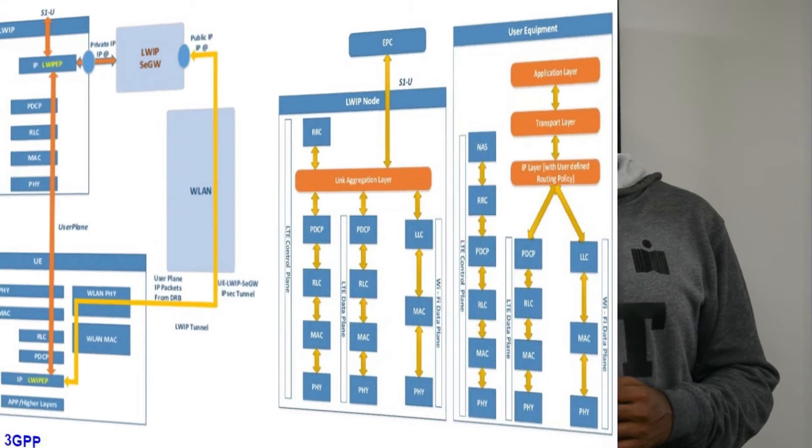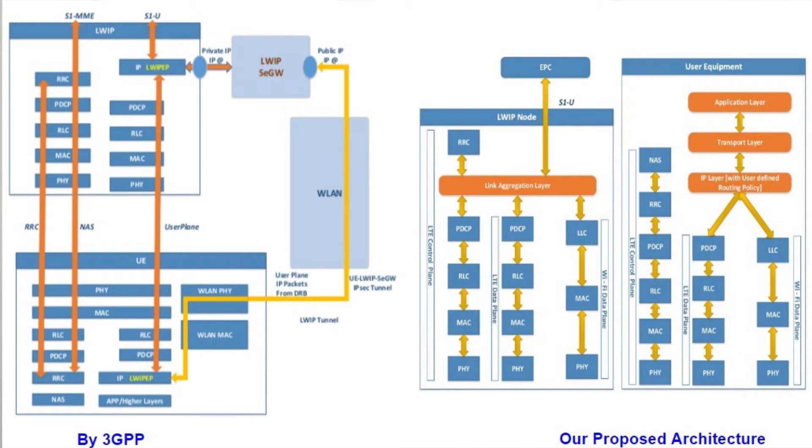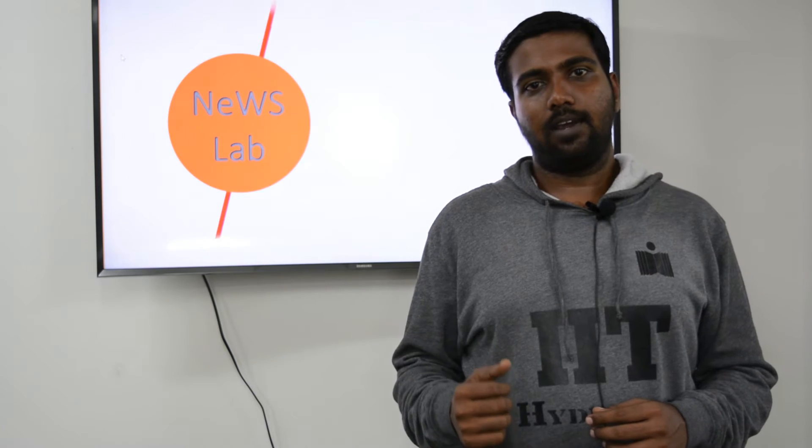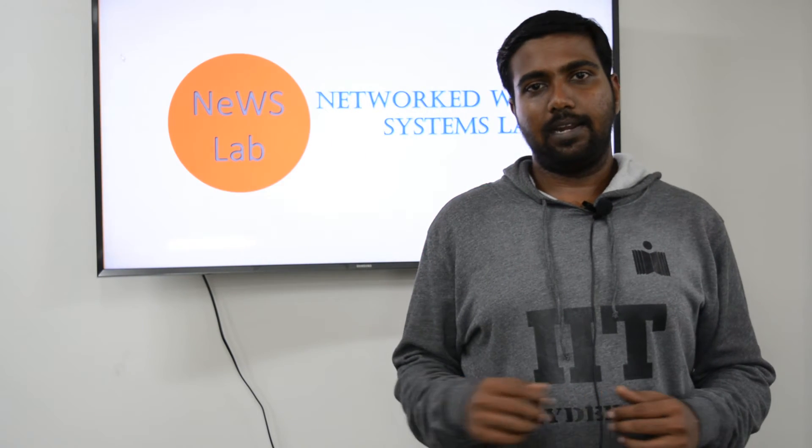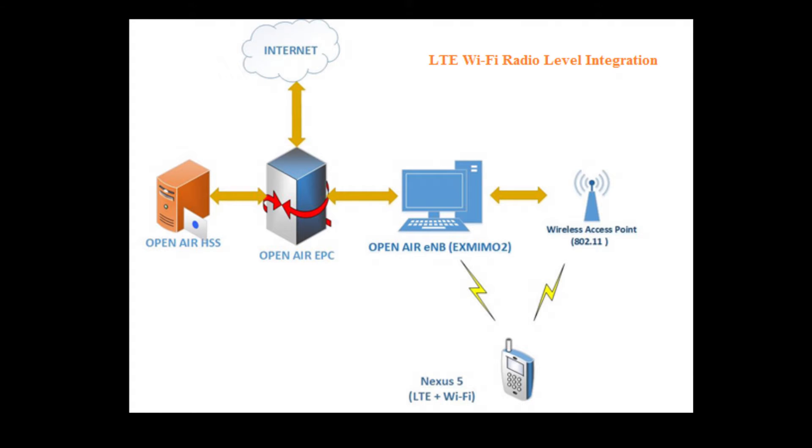We have implemented this using a link aggregation layer aggregating between LTE and Wi-Fi interfaces. This link aggregation layer regulates the flow at granularity of flow level, packet level, and bearer level between LTE and Wi-Fi interfaces.